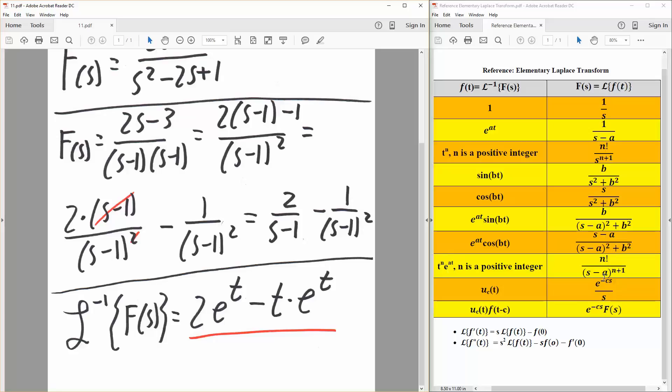a, we said, was 1. So it would be minus, because of this, t times e raised to t. This is our final answer, and that's all we need to do.